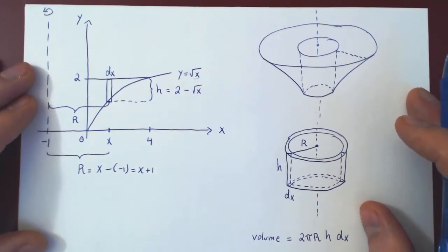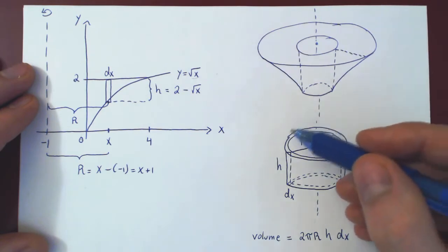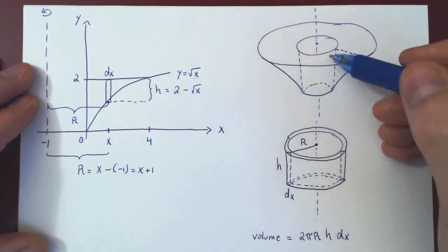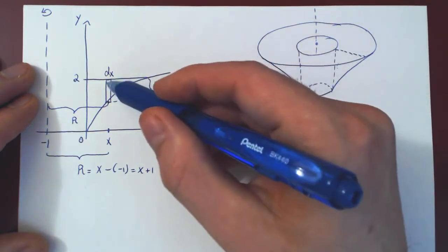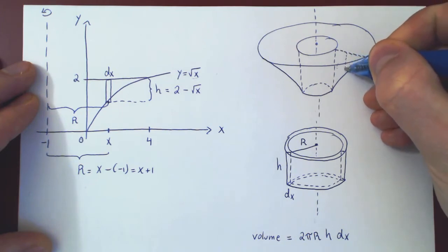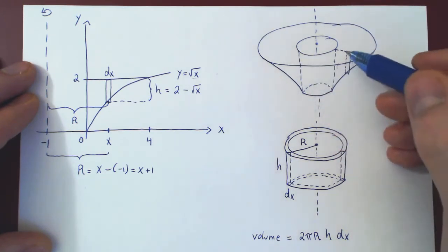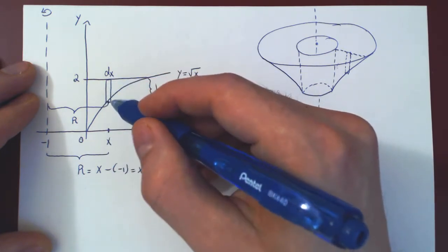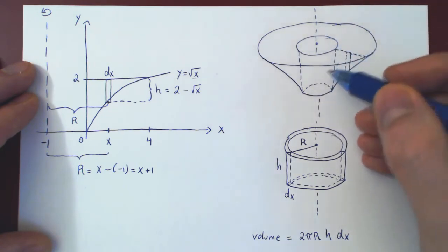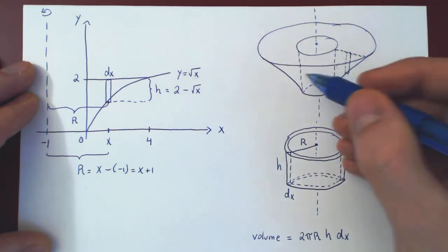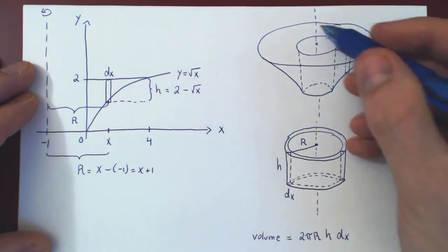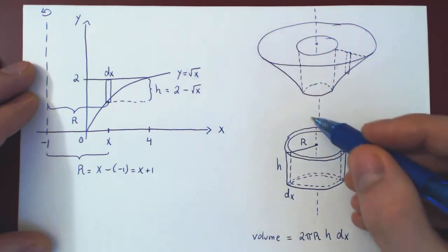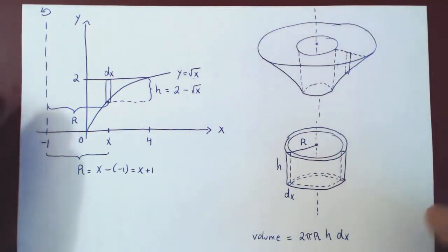This little cylindrical shell is within the full solid. Instead of revolving the full region about the axis of revolution, we revolve just a tiny portion of it — a little vertical slice. As you revolve this vertical rectangle about the axis of revolution, you generate a simple cylindrical shell within the full solid. To get the total volume of our solid of revolution, we have to sum the volume of all of these little cylindrical shells within the full solid. Of course, summing is integrating.